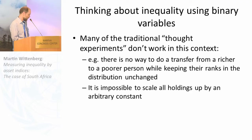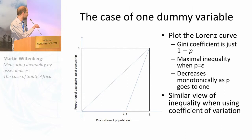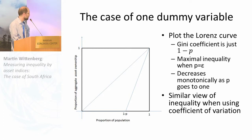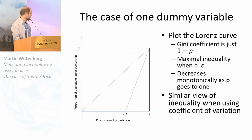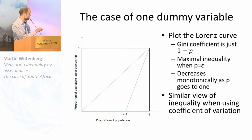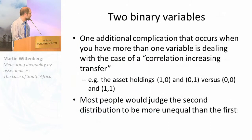If I only had one binary variable and wanted to do inequality analysis, none of the standard axioms work — I can't transfer from a richer to a poorer person while keeping ranks constant, I can't scale everything up. But even so, I can plot a Lorenz curve and calculate a Gini on it. The Lorenz curve just shows the fraction of the population that doesn't have the asset versus those that do, and the Gini coefficient is simply 1 minus p, where p is the fraction of the population that has the asset. So that kind of inequality measure does make sense — I can apply a Gini to a simple binary variable.